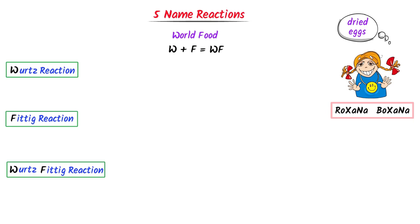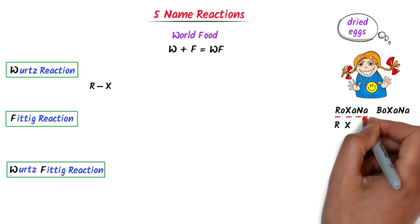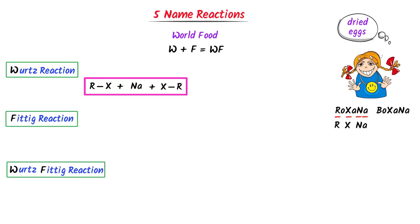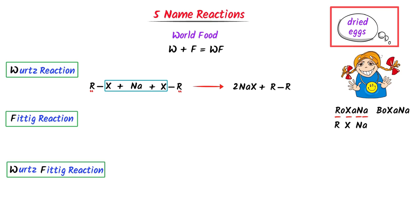In case of Wurtz reaction, I take R and X — it is alkyl halide. Note that X is halogen like chlorine, bromine, etc. Secondly, I take Na, which is sodium. Thirdly, I take this RX and write it again after sodium. Sodium will react with the two X (halogens) to give two sodium halide. This R and R combine together to form alkane. The dried X stands for dry ether. Thus, this is the Wurtz reaction.